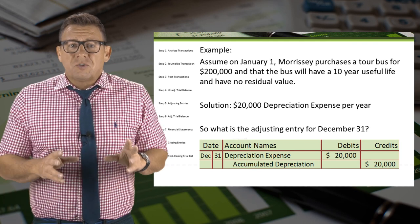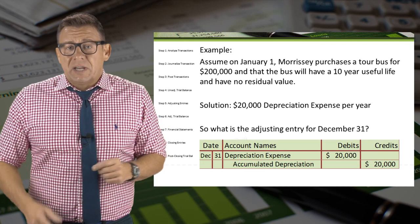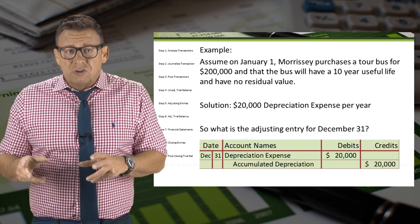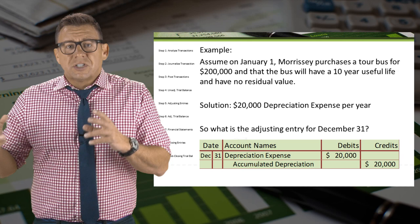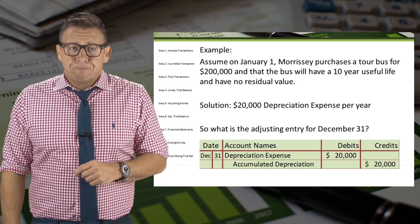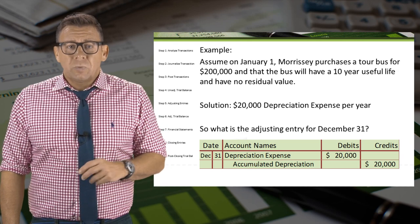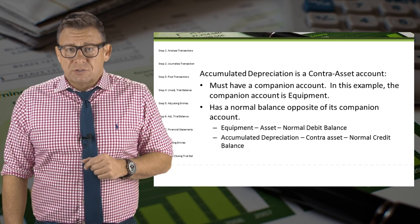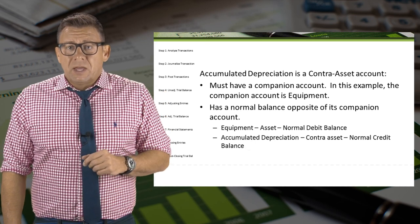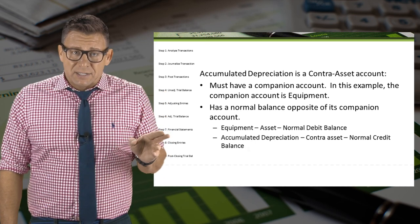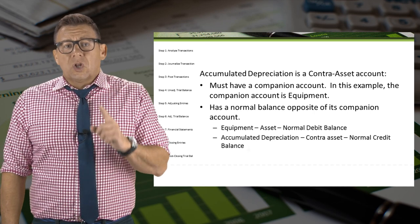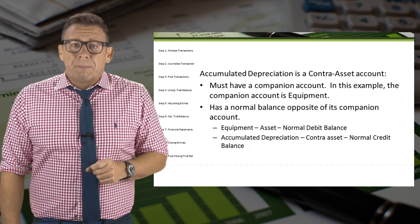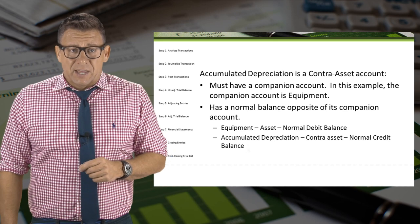This account's purpose is exactly what the name describes — it is the accumulation of all of the year's depreciation expense. Accumulated depreciation is a contra-asset account. This means that it is an asset, but it has a normal credit balance rather than a debit balance like all of our other asset accounts.